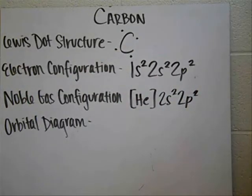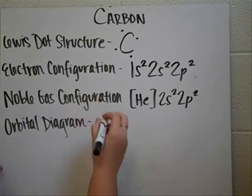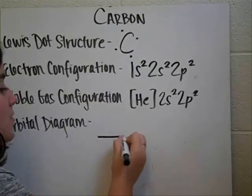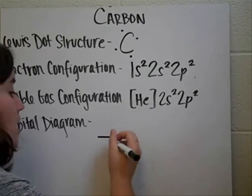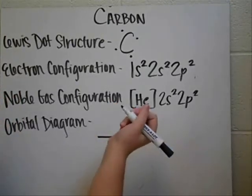And then we have our orbital diagrams, which basically just show how the electrons are positioned in the orbitals. One of these lines on here equals an orbital. And an orbital can only contain 2 electrons.